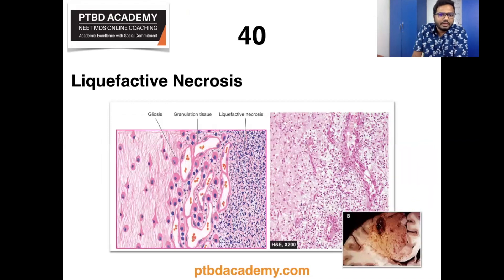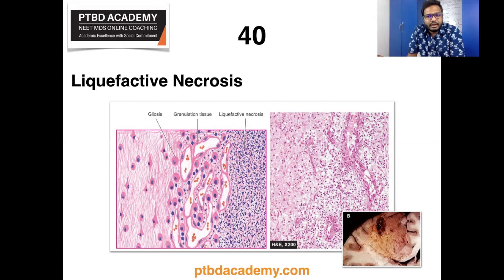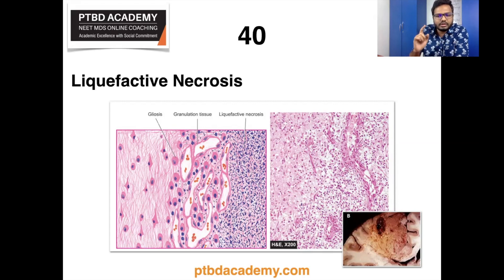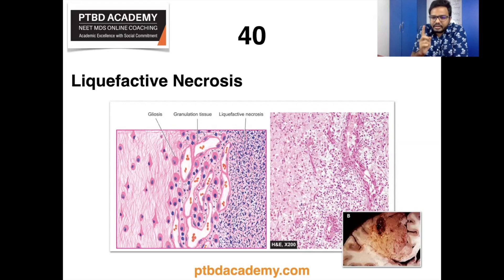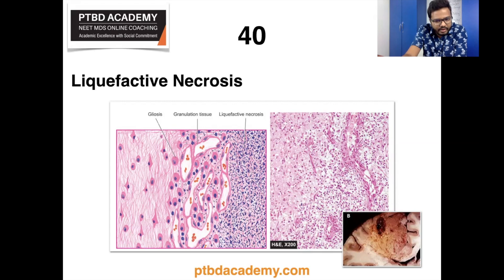The final topic is liquefactive necrosis and its synonymous organ — the brain. Histopathologic and gross pathologic images are visible on screen. Liquefactive necrosis in the brain occurs because of the action of powerful hydrolytic enzymes. It commonly occurs due to ischemic injury and bacterial or fungal infections. Common examples include brain infarct and abscess cavity. In cerebral infarcts, liquefactive necrosis is followed by gliosis — replacement by microglial cells distended by fatty material, also called gitter cells.